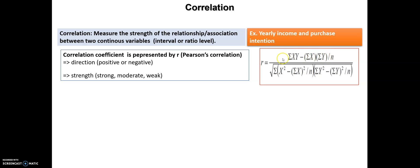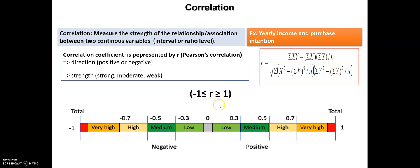We can use this formula in order to calculate the correlation coefficient. The correlation coefficient takes a value between minus one and plus one. Remember that if we have a correlation coefficient R equal to zero, that means we have no correlation — no relationship between the two variables.